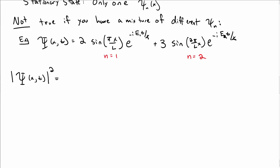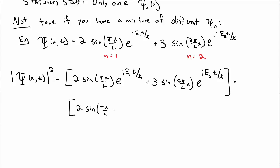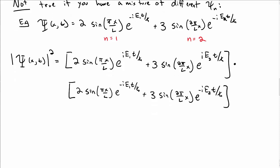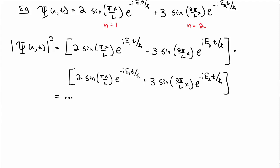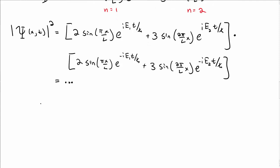Then the probability density, absolute value of capital Ψ squared, is—well, I take Ψ star and so I put a plus sign up in the exponentials, and then I multiply that by my original Ψ, all of which have minus signs up in the exponentials. And then I'm going to multiply these two terms, distributing terms through. There's a bit of algebra. I'm going to write one of the closer final steps.